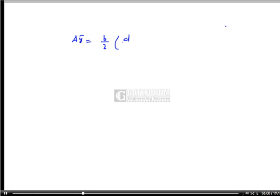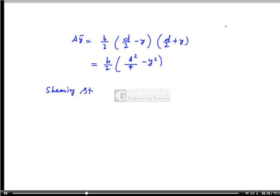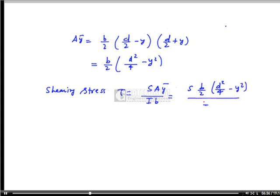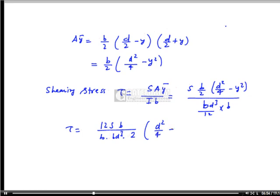Therefore, Aȳ = (b/2)·(d/2 − y)·(d/2 + y) = (b/2)·(d²/4 − y²). So shear stress τ = S·Aȳ / (I·b) = S·(b/2)·(d²/4 − y²) / (bd³/12 · b), which simplifies to τ = (12S·b) / (2·d·bd³) · (d²/4 − y²). The maximum shear stress occurs at the neutral axis where y = 0.